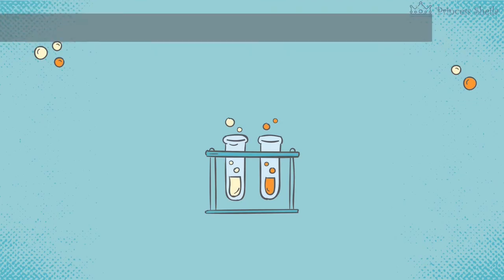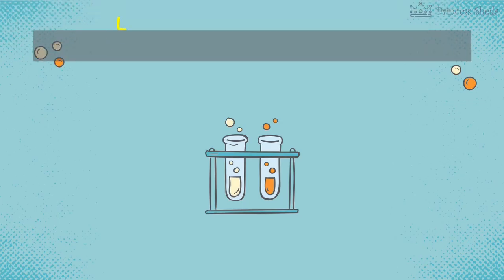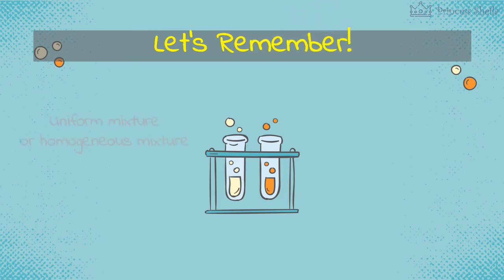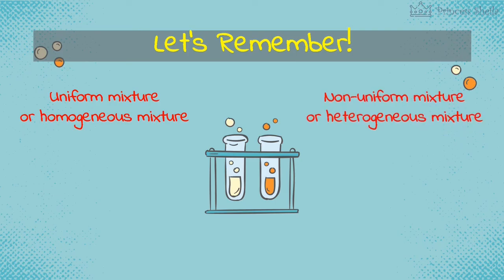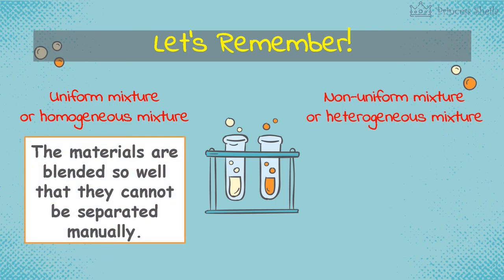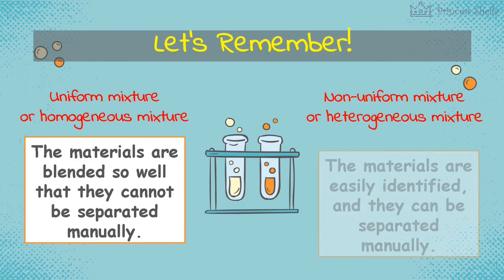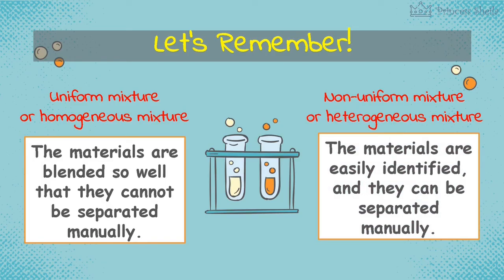Let's remember. Mixture is classified into two groups. The uniform mixture or homogeneous mixture, and the non-uniform mixture or heterogeneous mixture. In homogeneous mixture, the materials are blended so well that they cannot be separated manually. On the other hand, the materials in heterogeneous mixture are easily identified and they can be separated manually.